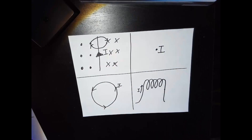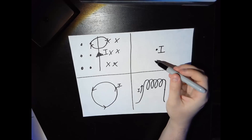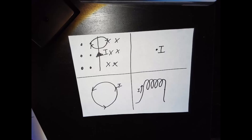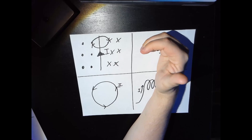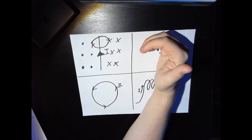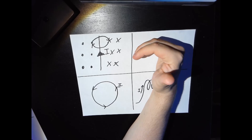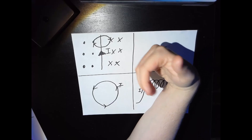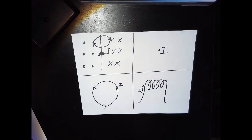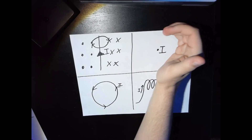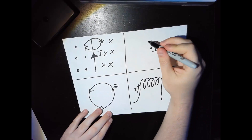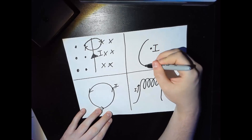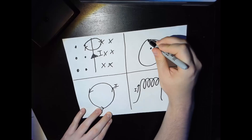For the second problem, the current is coming straight out of the page. If I hold my thumb coming straight out, I can see that my fingers are aiming in a counterclockwise direction, and following that along, it's always going to be counterclockwise. So the induced magnetic field is going in a counterclockwise direction.